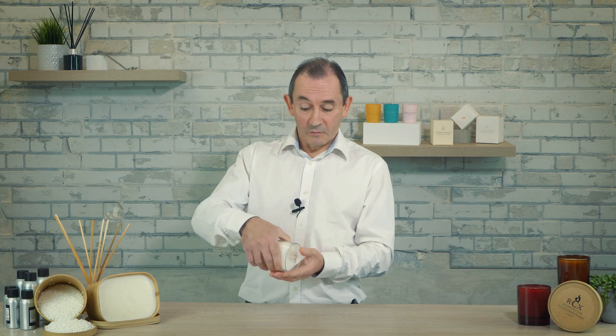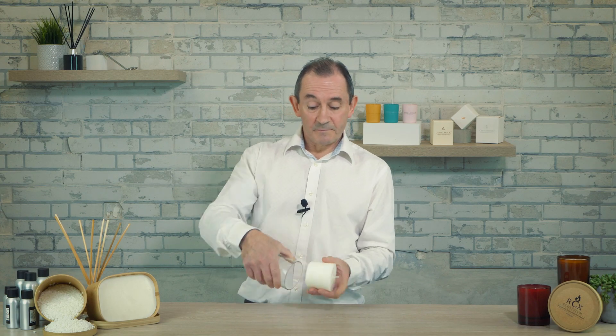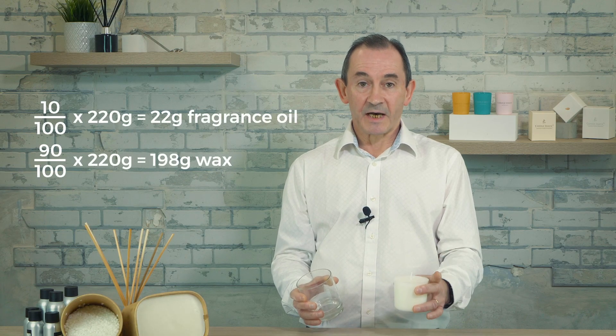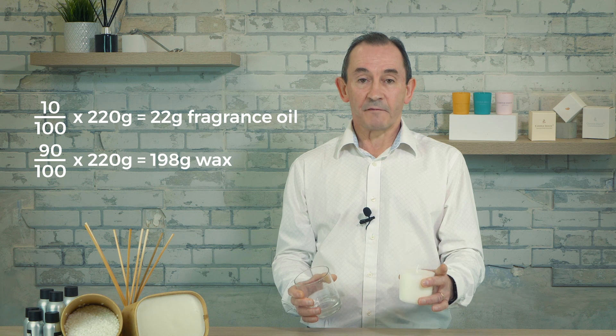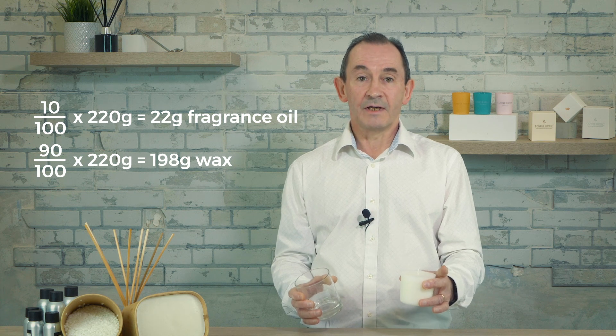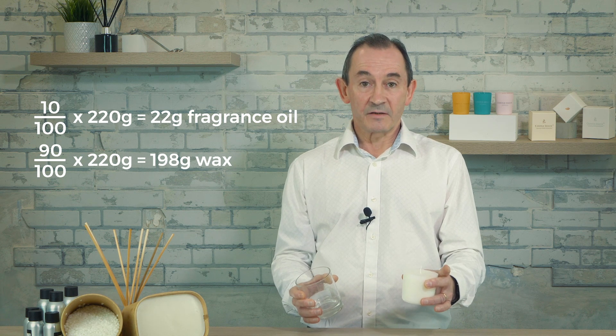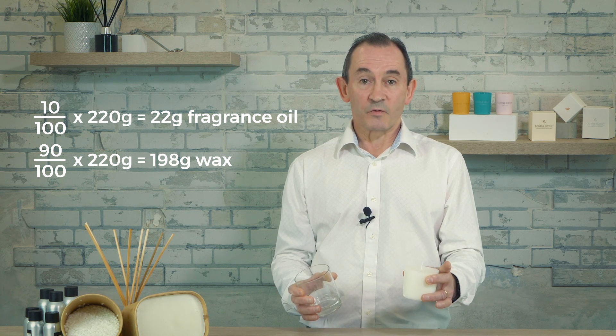For example, this candle weighs 220 grams. I know by using the fragrance content method that 10% of 220 grams is 22 grams. So this candle contains 22 grams of fragrance oil. The remainder is made up of the wax.